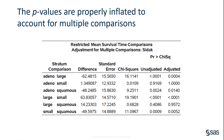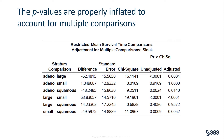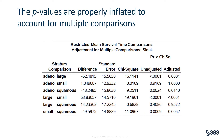Results from pairwise comparisons suggest that you can divide the four risk groups into two classes. The first class consists of small and adeno groups, and there is no significant difference in the RMST between them. The second class consists of large and squamous groups, and the paired comparison is not significant. However, there is a significant difference in any paired comparisons between these two classes.